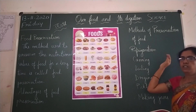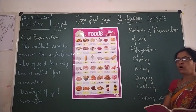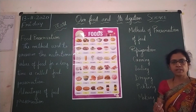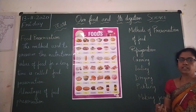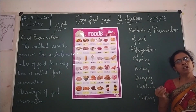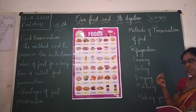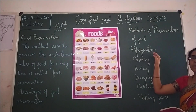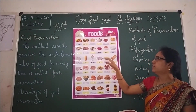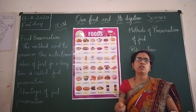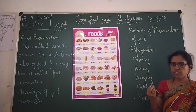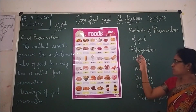The first method is refrigeration. Your mother keeps fruits, vegetables, milk, and eggs in the refrigerator. If you keep food in the refrigerator, germs will not grow because of the low temperature. Foods like bread, eggs, milk, vegetables, and fruits can be preserved in the refrigerator.